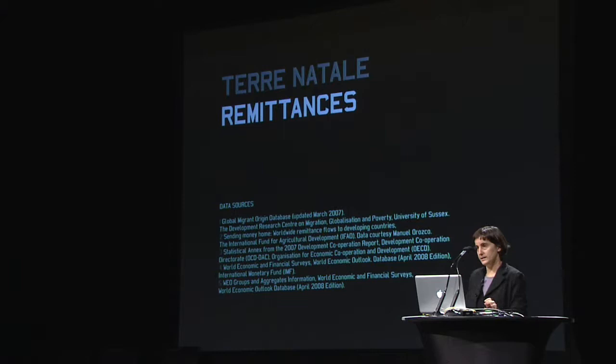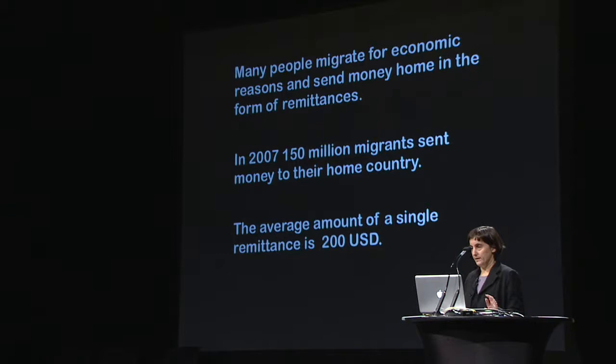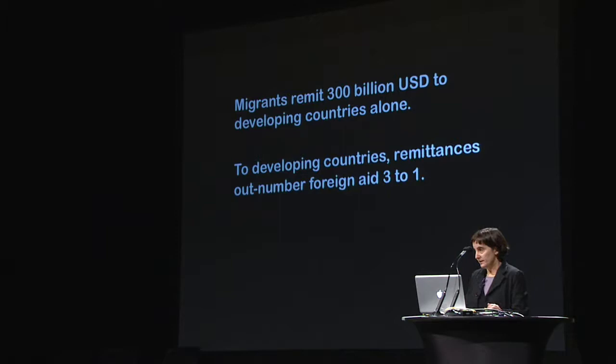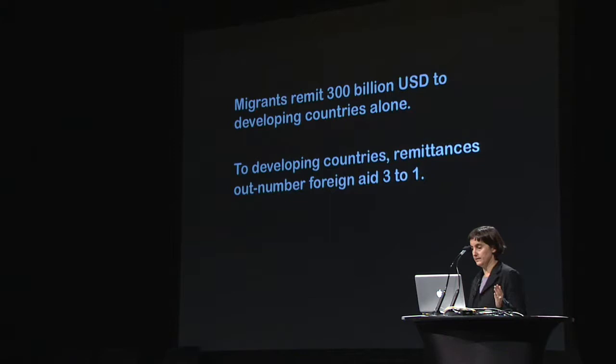The next scene was remittances. Remittances are a testament to the fact that there's an informal global economy — people migrate and send money home. A 2007 data set showed 150 million migrants sent money to their home country. The average was around $200 U.S. dollars, and the cumulative amount added up to $300 billion U.S. dollars, which is three times the amount of foreign aid sent to those same developing countries.